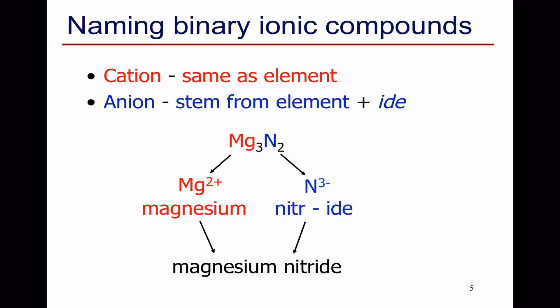Mg3N2. The cation is magnesium, and the anion comes from nitrogen. We take the nitr part and add "-ide" to get nitride, magnesium nitride. Notice that the formula is quite complicated, but the name is quite simple, because we can always work out the ratio Mg3N2, because we know that magnesium is Mg2+ and nitride is N3-.